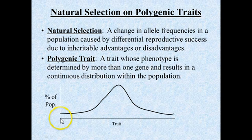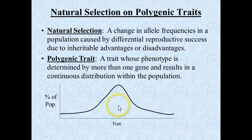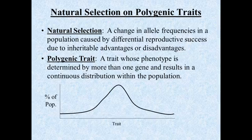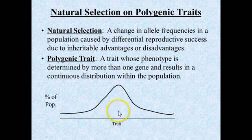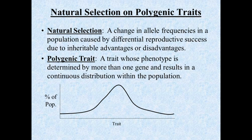You'd have a very small number of really short people and a very small number of really tall people, with the average or central tendency falling somewhere in the middle. Examples of polygenic traits include height, hair color, and skin color — traits with many, many possibilities rather than just two. We've also discussed in class that things like intelligence, athletic ability, and aggression are also polygenic traits that vary in the population.